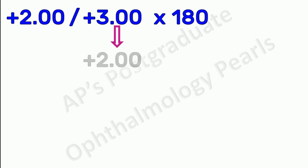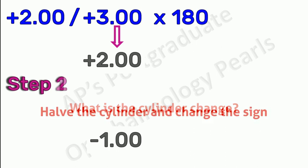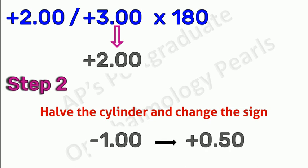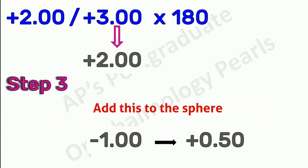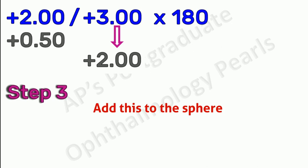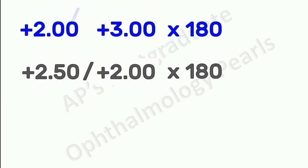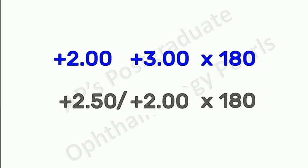Let us say that you want to make this cylinder plus 2 instead of plus 3. Step 1: the cylinder change is minus 1, that is we are subtracting 1 from the original cylinder. Step 2: when we half this cylinder and change the sign, we get plus 0.5. Step 3: this plus 0.5 should now be added to the original sphere, so plus 2 plus 0.5, we get plus 2.5.